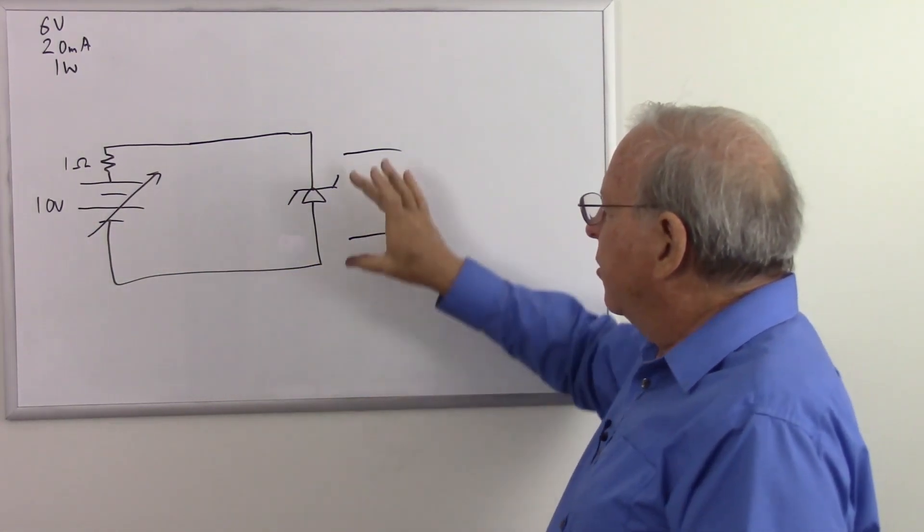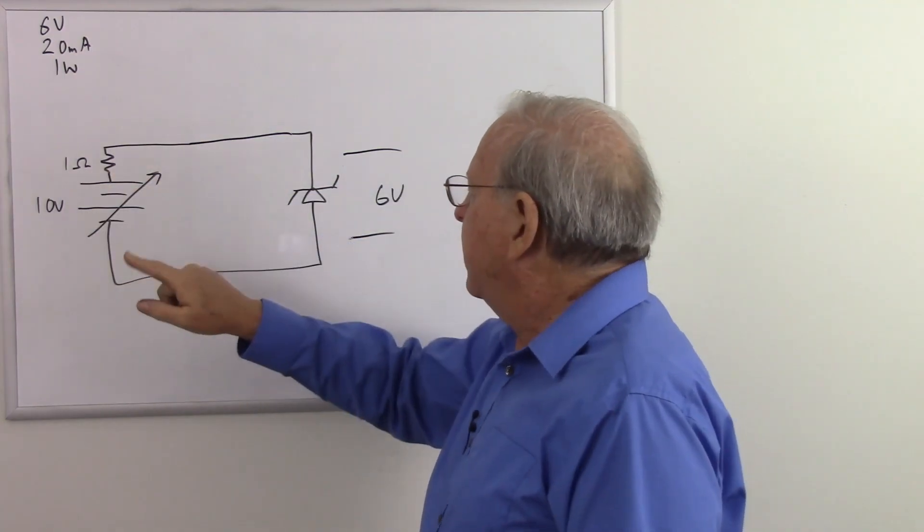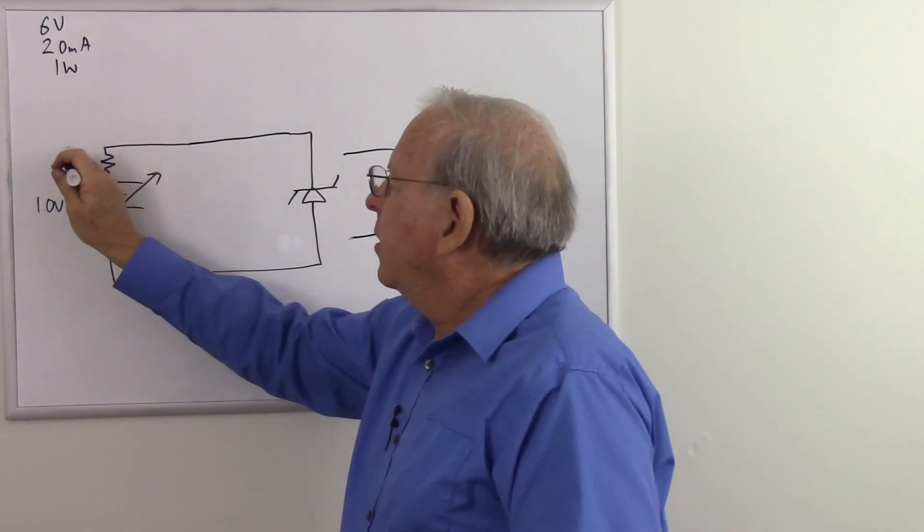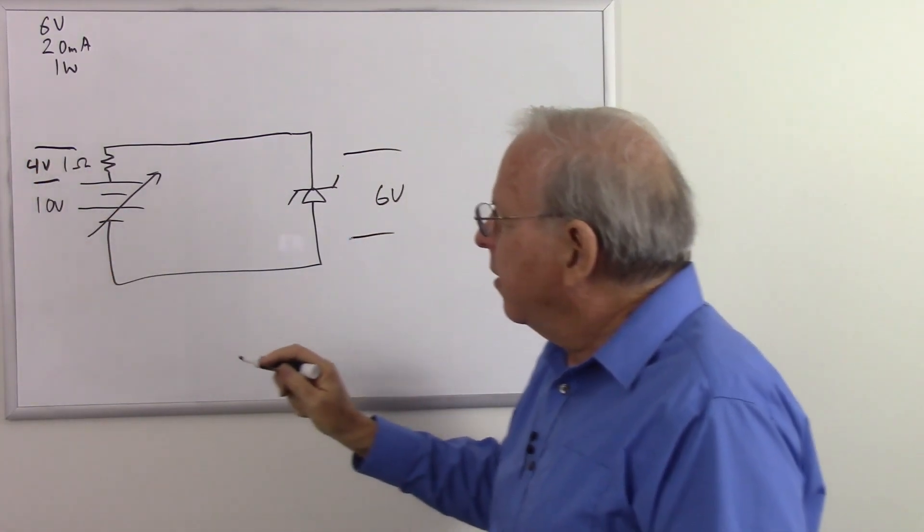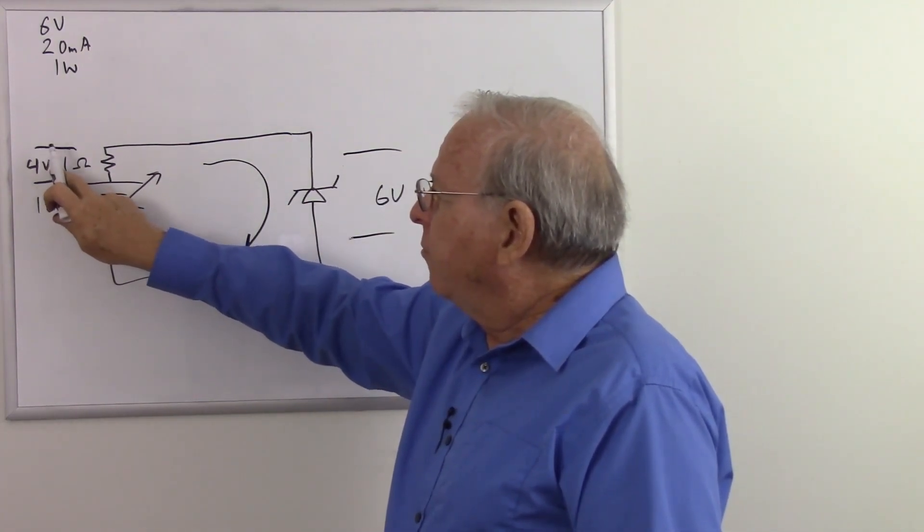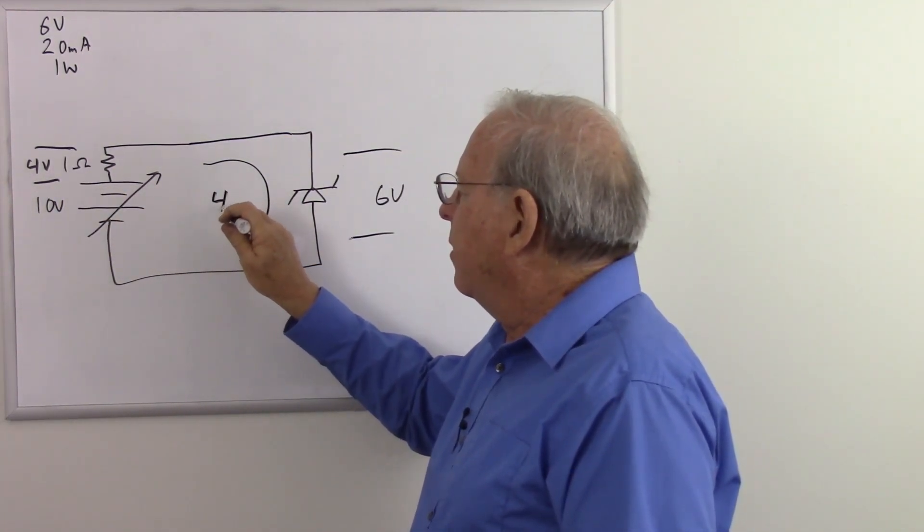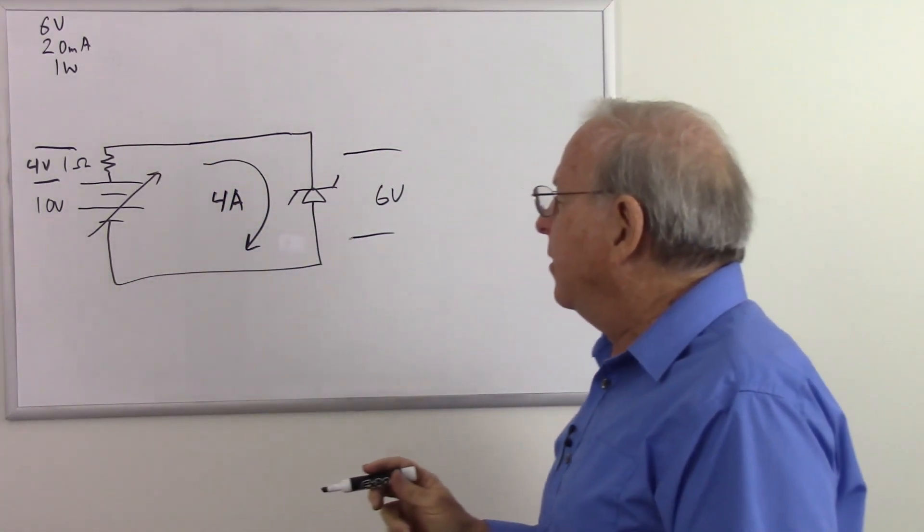So Kirchhoff's voltage law says that the voltage here and the voltage across this resistor must add up to 10. So we have 4 volts across there. So how much current do we now have flowing through that Zener diode? 4 volts, 1 ohm, that means we have 4 amps. It's a little bit higher than 20 milliamps, I think.